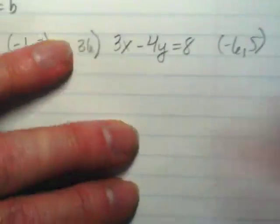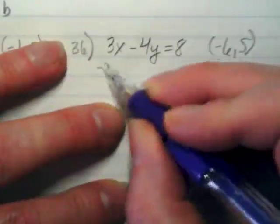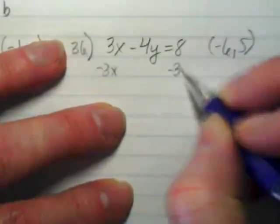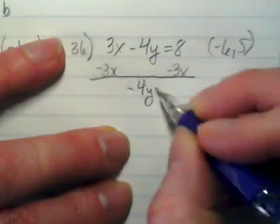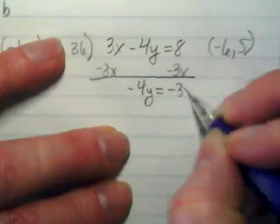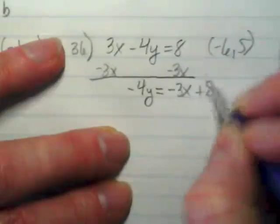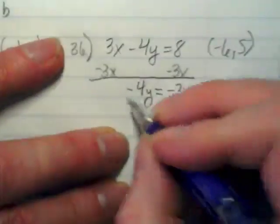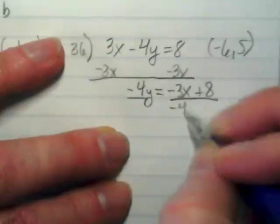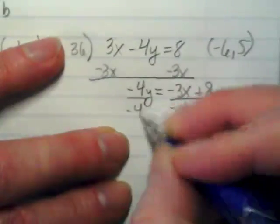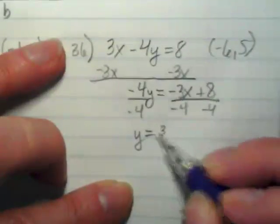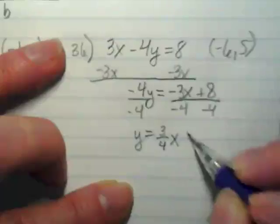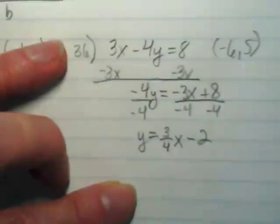So I'm going to put this first into slope-intercept form by subtracting the 3x. And I get negative 4y is equal to negative 3x plus 8. When I divide all of this by negative 4, I get y is equal to positive 3 over 4x minus 2.